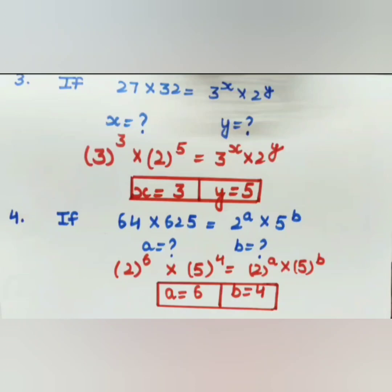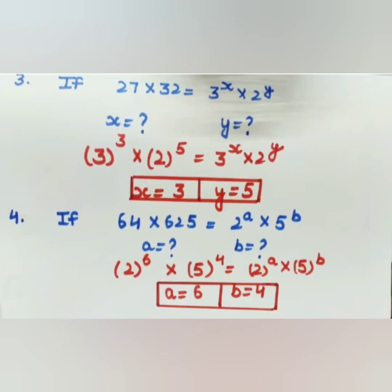Similarly, 32 equals 2 to the power of 5. So we have 3 to the power 3 into 2 to the power 5 equals 3 to the power x into 2 to the power y. Since the base 3 is the same on both sides, x equals 3. And since the base 2 is the same, comparing powers gives us y equals 5. It is very necessary to make the base the same on both sides.